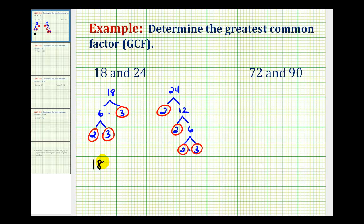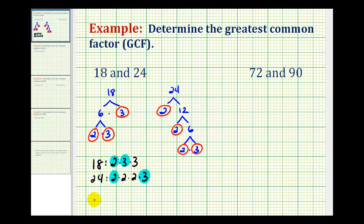So the prime factorization of 18 is 2 times 3 times 3, and the prime factorization of 24 is 2 times 2 times 2 times 3. From here, we determine which prime factors they have in common — the product of those common prime factors will be the greatest common factor. They have 1 factor of 2 in common and 1 factor of 3 in common, which tells us the greatest common factor of 18 and 24 is 2 times 3, or 6.